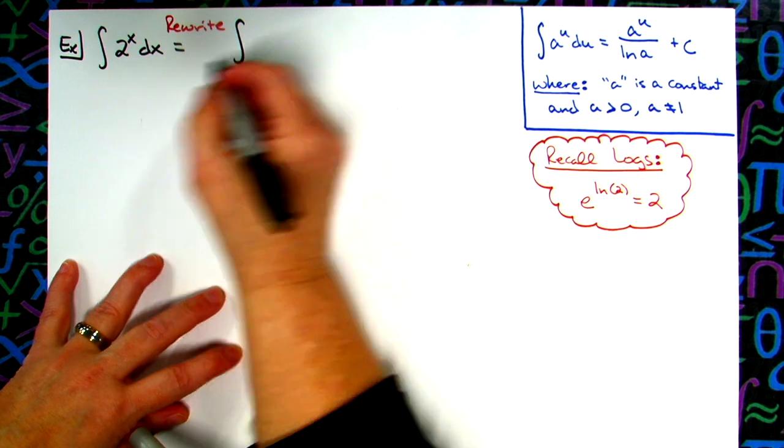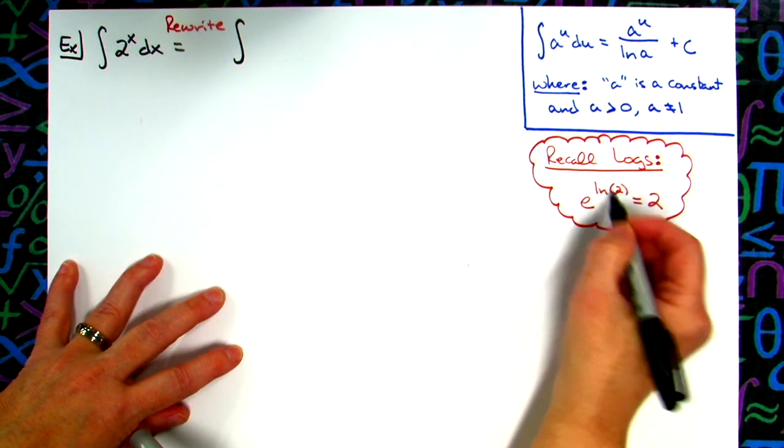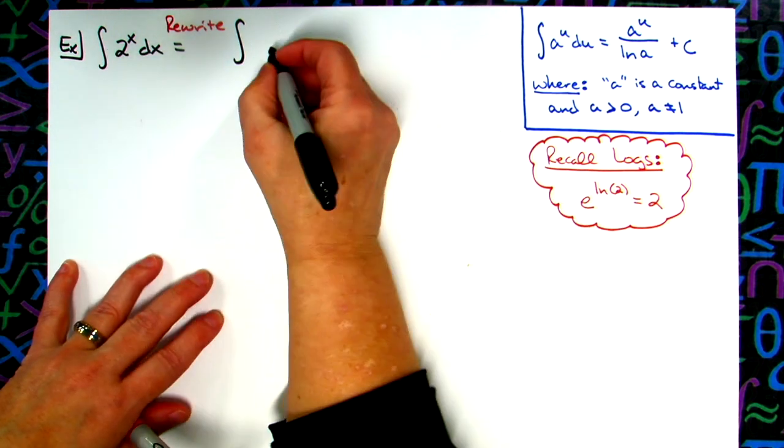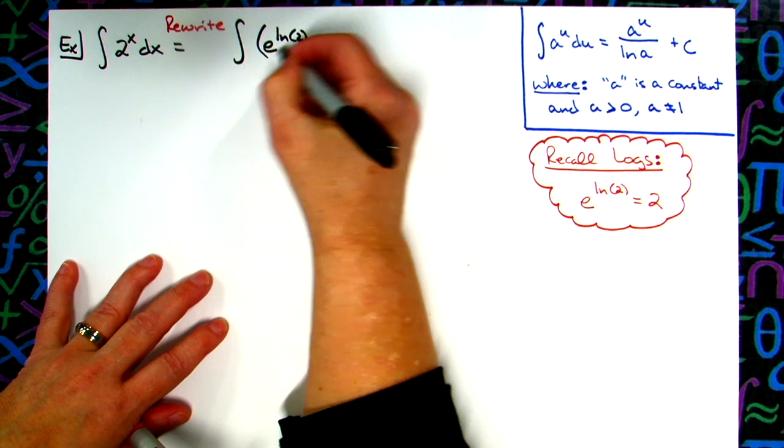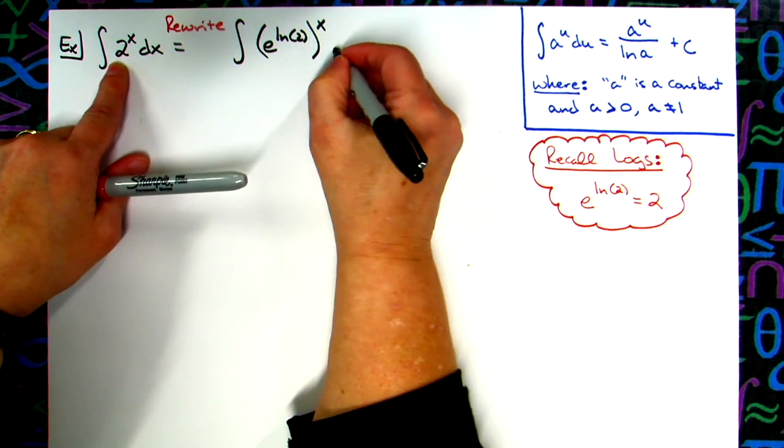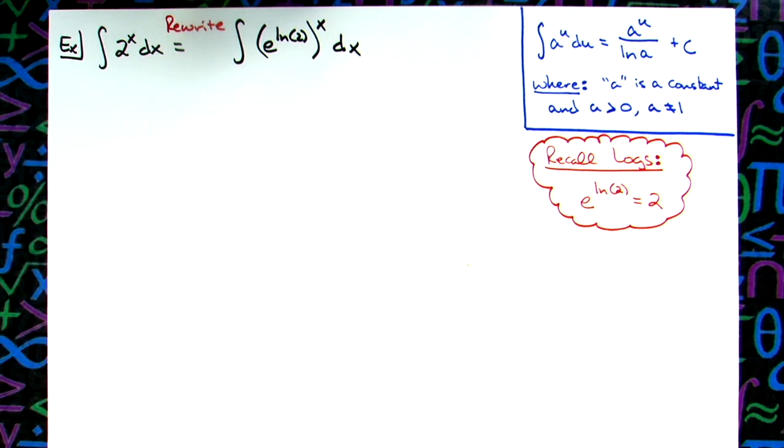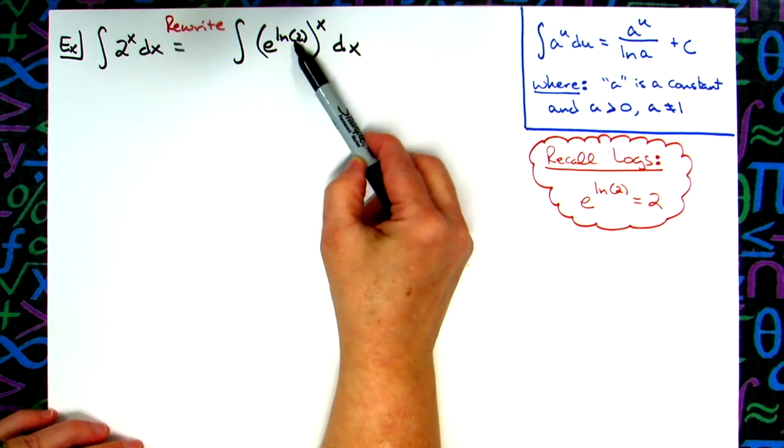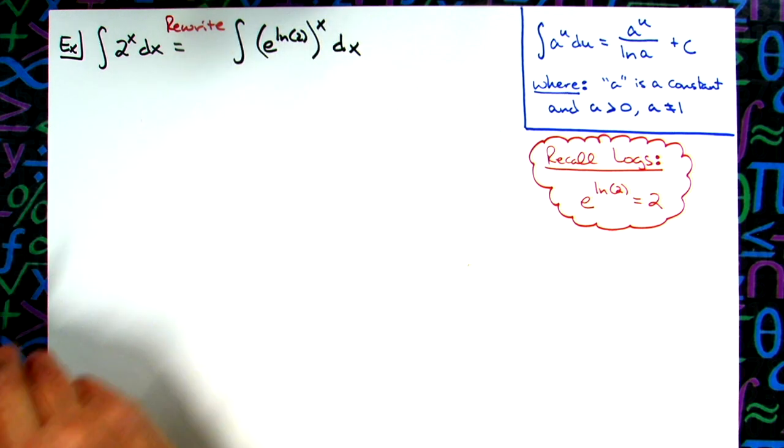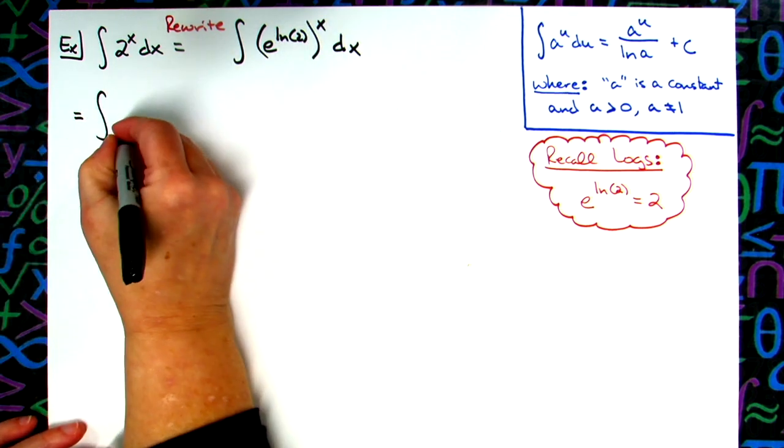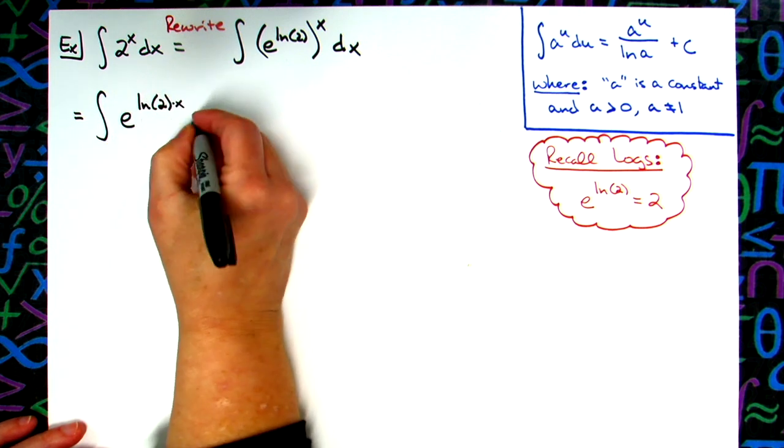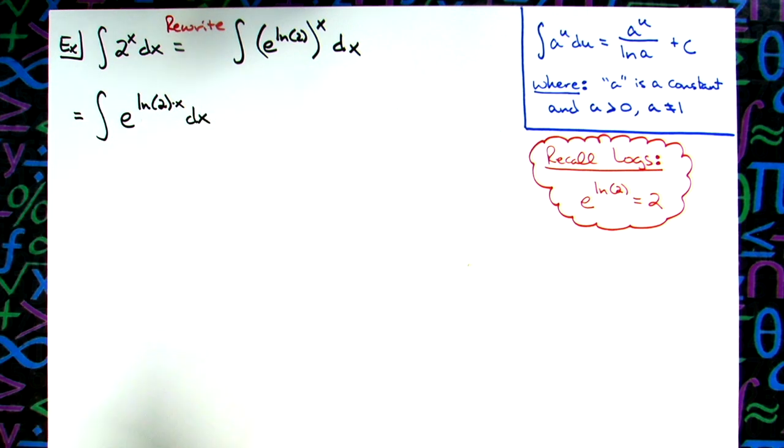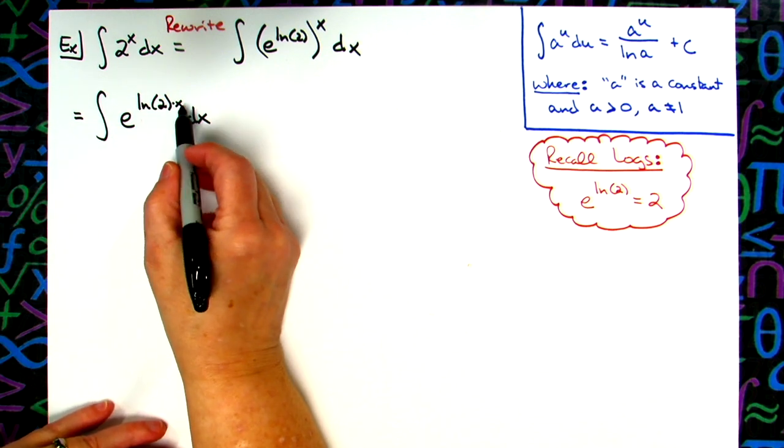So which means then I can rewrite this, I can substitute to this e raised to the natural log of 2. So e raised to the natural log of 2, and then that entire thing, because I'm just replacing the 2, is raised to the x dx. Now we know that a power raised to a power, all we have to do is multiply. So I'm going to come over here, and I'm just going to rewrite this so that I've got an e raised to the natural log of 2, and then times x. Now I've got an e raised to an exponent.